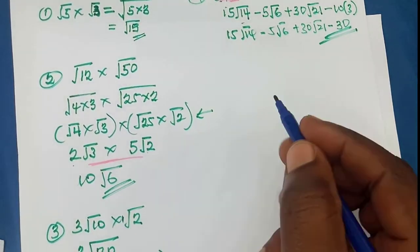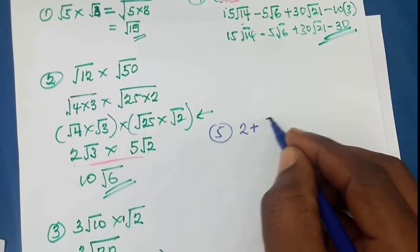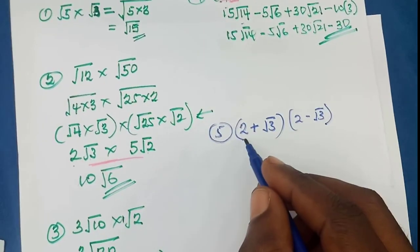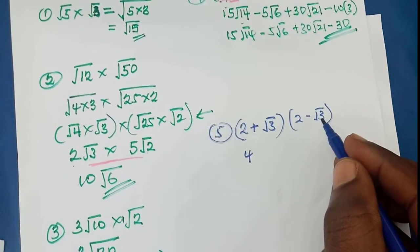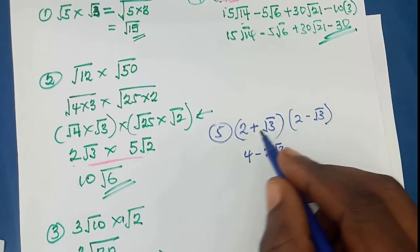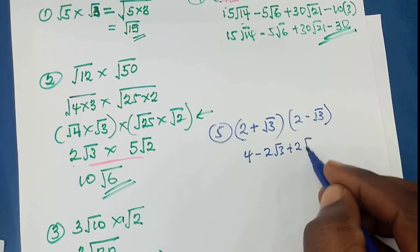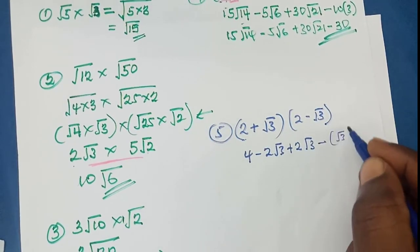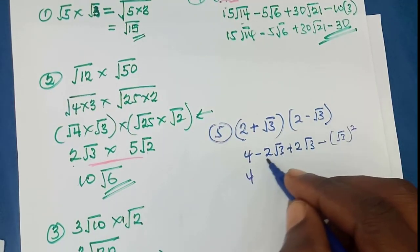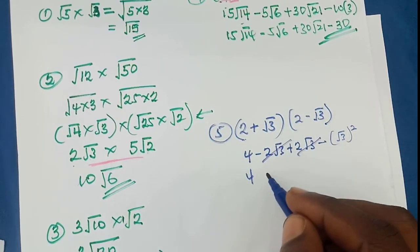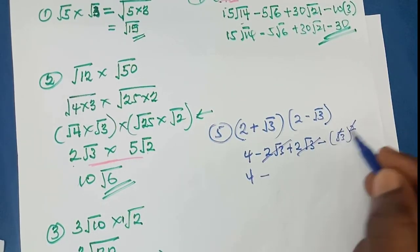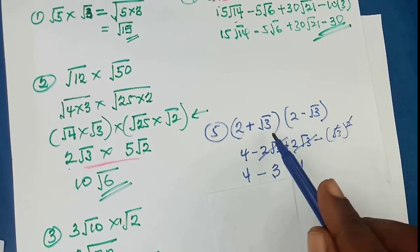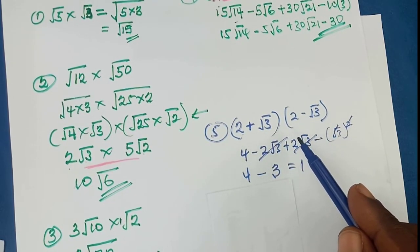If you have (2 plus root 3) multiplied by (2 minus root 3): 2 times 2 gives 4, 2 times negative root 3 gives negative 2 root 3, root 3 times 2 gives positive root 3 — wait, that gives negative root 3 — these cancel out, and root 3 times root 3 gives 3. So 4 minus 3 equals 1. This is actually the difference of two squares, which we will discuss in the next session.